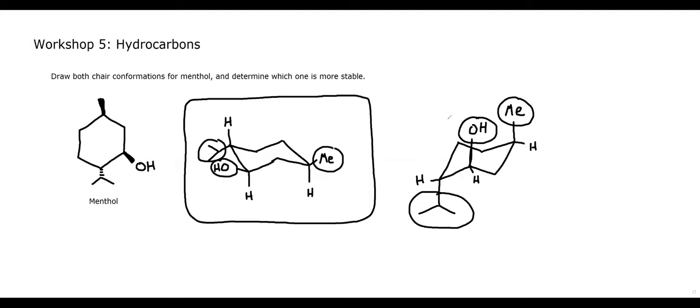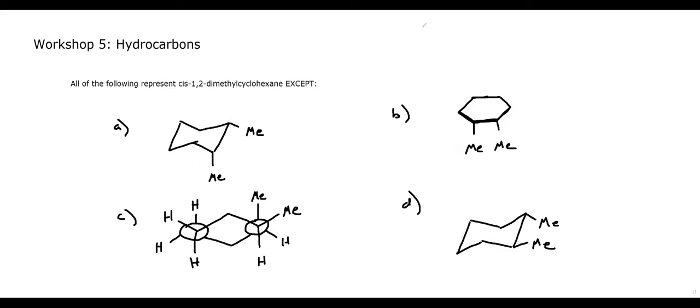So obviously the more stable chair conformation is the one in which all of these groups are equatorial, because we have essentially no 1,3-diaxial interactions. Remember, large groups want to be equatorial — there's more space in the equatorial position and they won't bump into other axial groups.